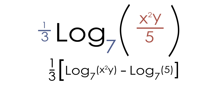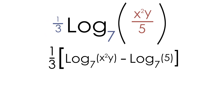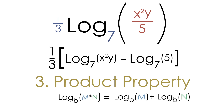We're still not finished — we can expand this even further using the product property. This is very similar to the quotient property, except instead of division, we're dealing with multiplication. If two things are being multiplied inside the log, we can separate them into two separate logs with a plus sign in the middle.